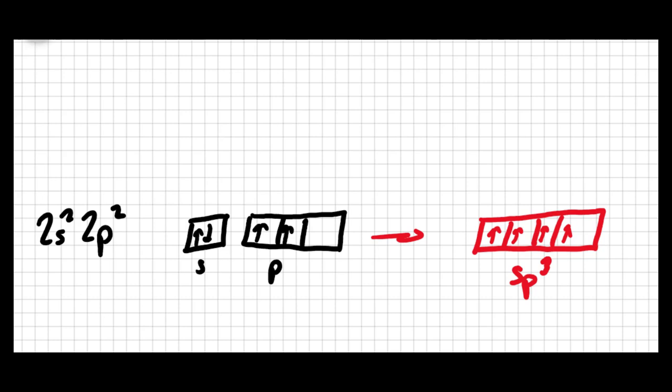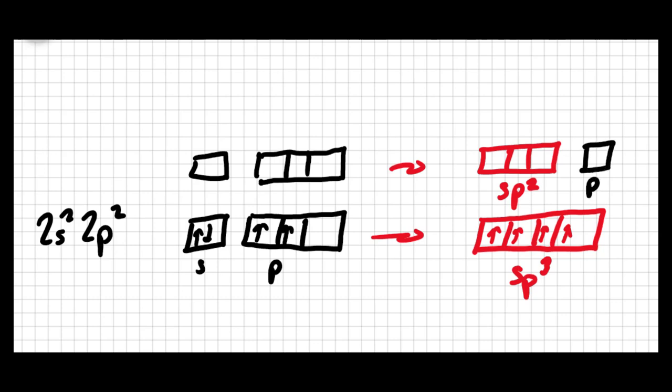Now sp3 is not the only way to blend orbitals. You can take an s orbital and p orbitals. And instead of blending all three of the p orbitals, you could blend the s orbital with two of the p orbitals. This is called sp2. And when you do that, you have one of your original p orbitals that's just hanging out. It's unhybridized. This unhybridized orbital is perpendicular to the hybridized orbitals. It just sticks out at the right angle.